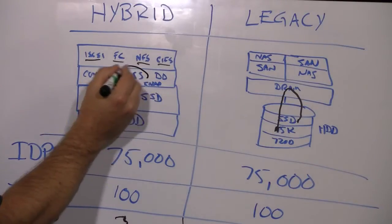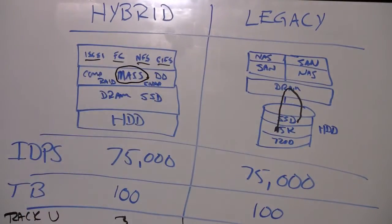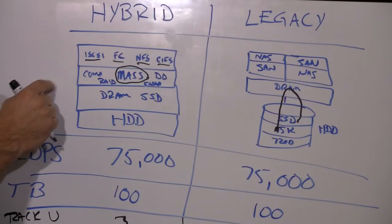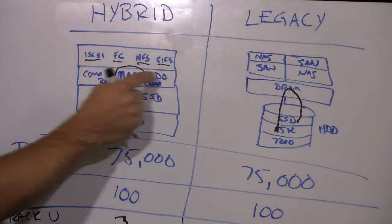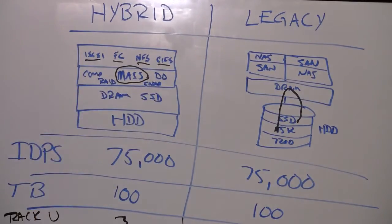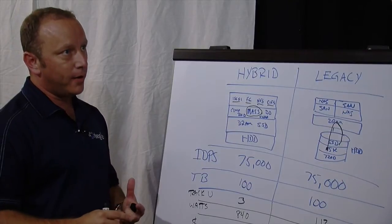But then right below that is what we call MASS, our Metadata Accelerated Storage System engine. And what that does is inline the data path, it drives compression, deduplication, RAID, and snapshot pointers in a dedicated portion of the system outside of the data path.